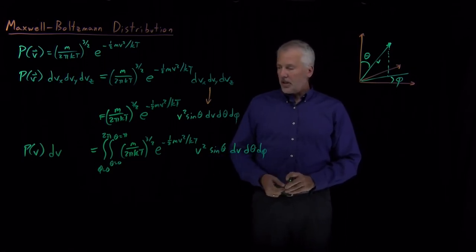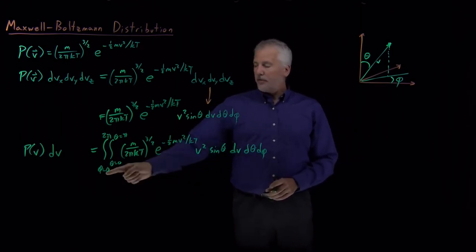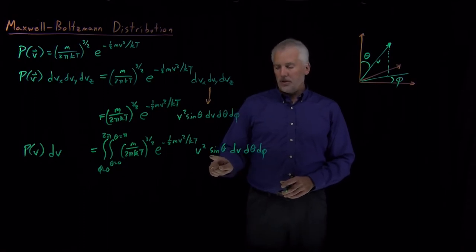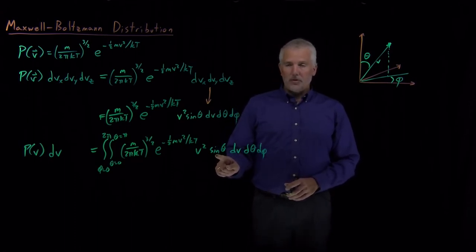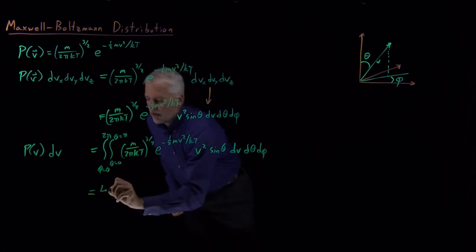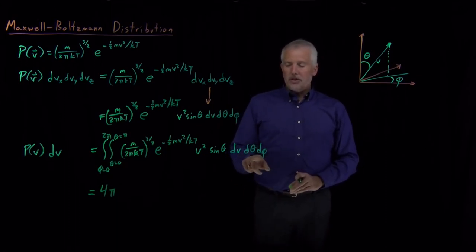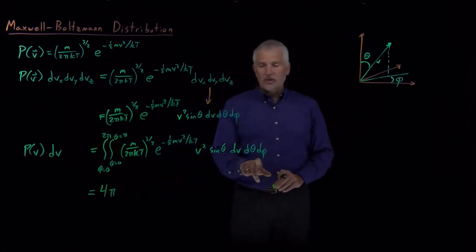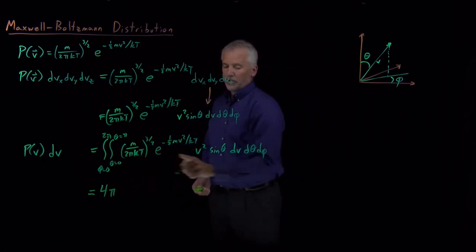Luckily these integrals are not terribly difficult. The phi integral is easiest: there's no phi inside the integral, so integrating dφ from 0 to 2π gives just 2π. For theta, we have the sinθ term, and integrating sinθ from 0 to π gives 2. A shortcut is recognizing that integrating over all theta and phi values calculates the surface area of a unit sphere, which is 4π. So those two angular integrals together give a factor of 4π.